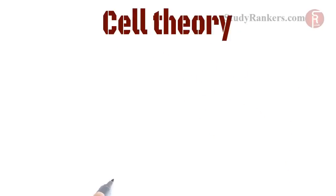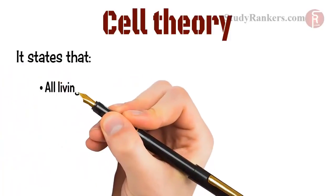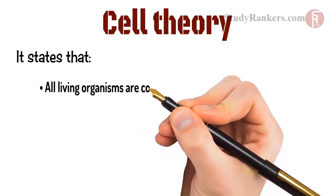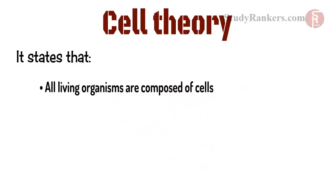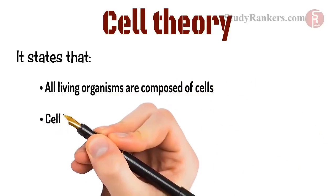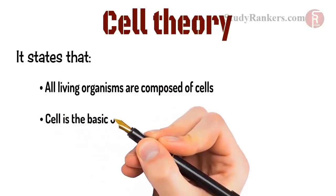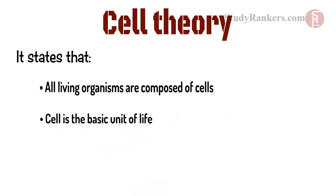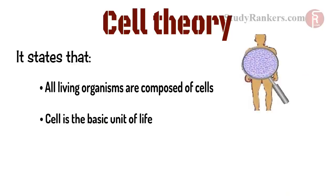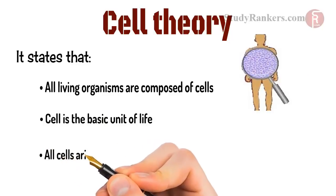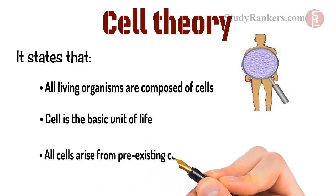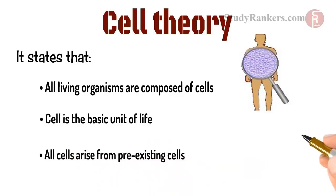The cell theory states that all plants and animals are composed of cells and the cell is the basic unit of life. This was presented by two biologists, Schleiden and Schwann. After this, the theory was further expanded by Virchow, suggesting that all cells arise from pre-existing cells.